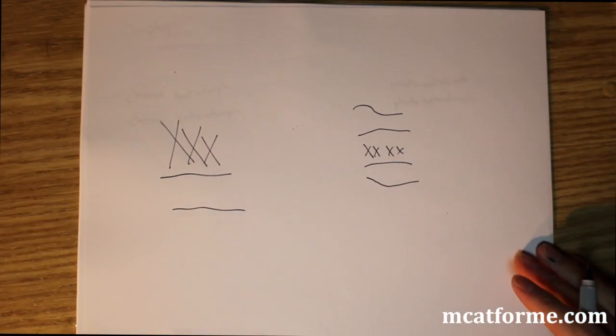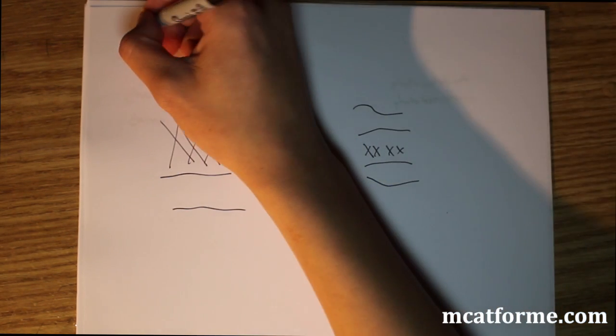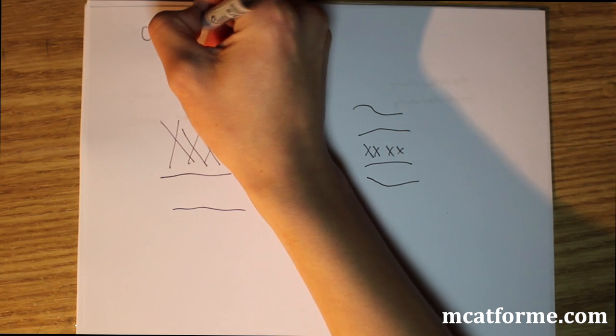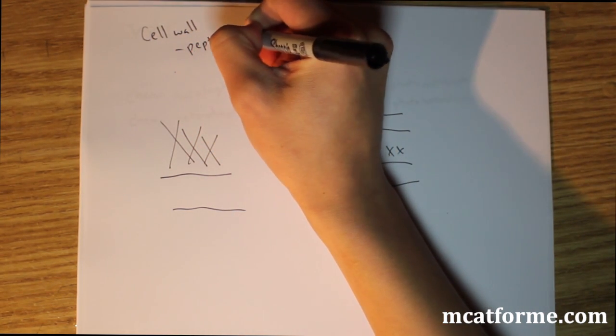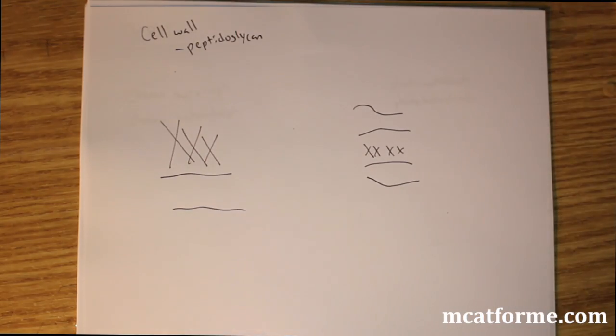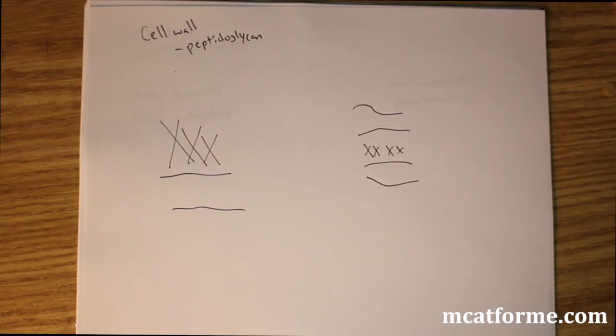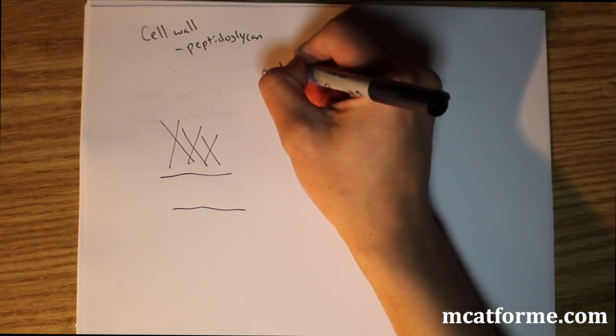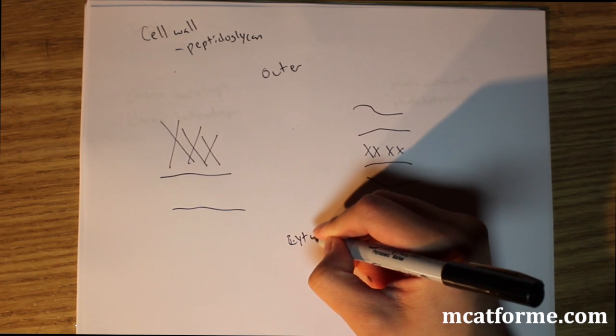So now we're going to look into the bacterial cell wall. The bacteria have cell walls made out of something called peptidoglycan, made out of sugars. So peptidoglycan is this area right here. All these X's I consider the peptidoglycan. We can think of this as the outer layer and this is the inside, the cytoplasm.